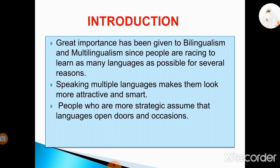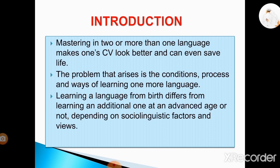In the last few decades, great importance has been given to bilingualism and multilingualism since people are racing to learn as many languages as possible for several reasons. Some think that speaking multiple languages makes them look more attractive and smart. Others who are more strategic assume that languages open doors and opportunities. In fact, having a second language makes one's CV look better. Moreover, mastering more than one language can even save lives. However, the problem that arises is the conditions, process, and ways of learning one more language. In fact, learning a language from birth differs from learning an additional one at an advanced age, depending on sociolinguistic factors and views.